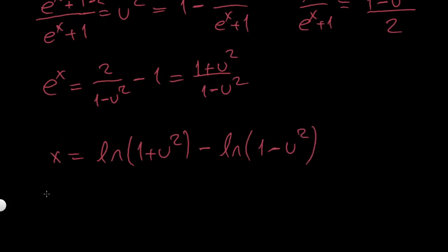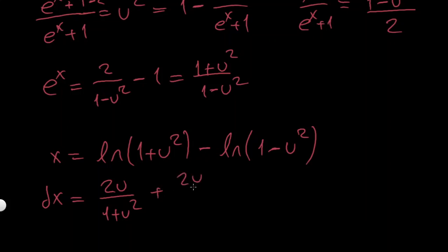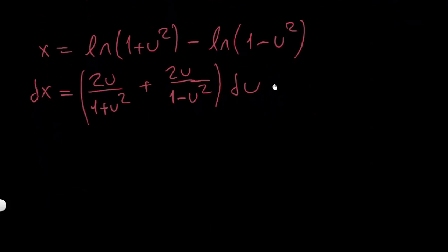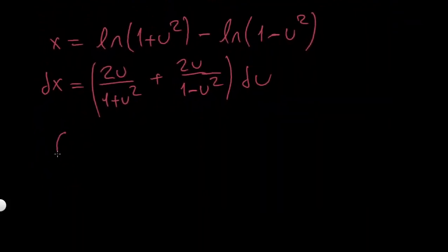Now I differentiate both sides. The derivative of ln(1 + u²) gives 2u over (1 + u²), and for the second term, minus ln(1 - u²), the minus signs combine to give plus 2u over (1 minus u squared). So dx equals this expression times du. Now I can substitute everything back into my integral.